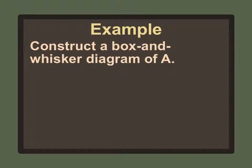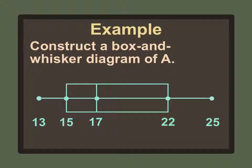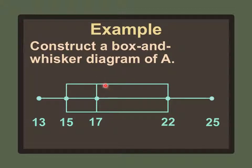Now we draw the box and whisker diagram for A. The smallest number is 13 and the highest is 25 as endpoints. The median 17 is closer to 13 than to 25, so it goes there. The upper quartile 22 is close to 25, and the lower quartile 15 is between 13 and 17. We draw the box around the upper and lower quartiles and put a hash mark at the median, 17.